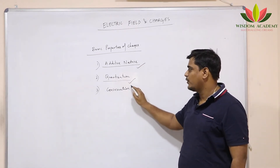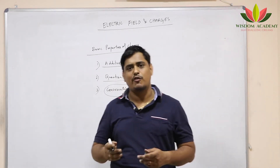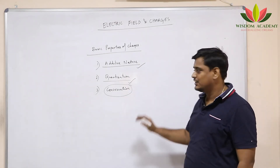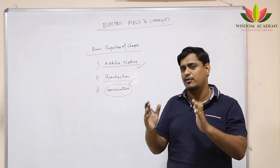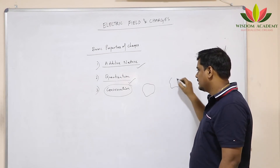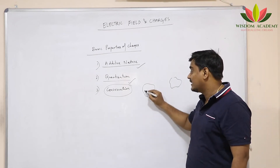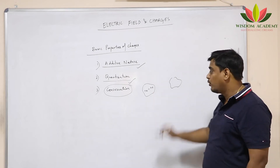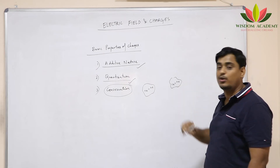Now we will look at conservation of charge. Just like conservation of energy and conservation of mass studied in junior classes, conservation of charge says that charge cannot be created and cannot be destroyed — it will always remain constant for a system. For example, if there are two neutral bodies, in each the number of electrons equals the number of protons.